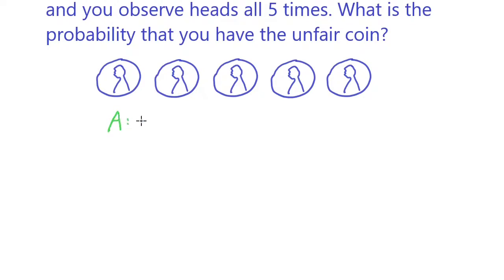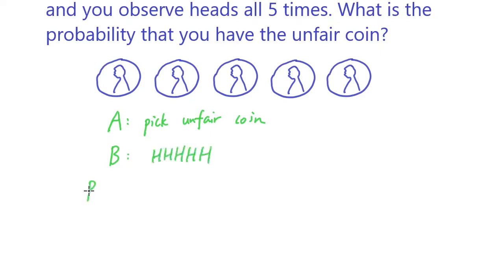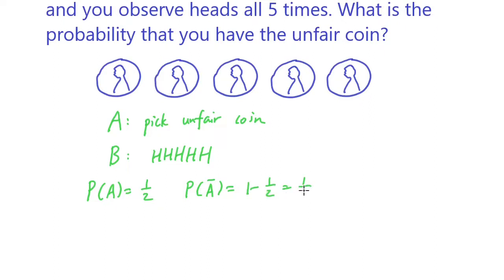Let A be the event that you pick the unfair coin, and let B be the event that you observe all five heads. The probability of A is one half, because we are picking the coins at random. Which means the probability of A-bar is one minus probability of A, so one minus one half, which is also one half.